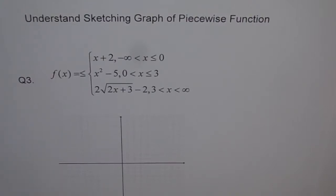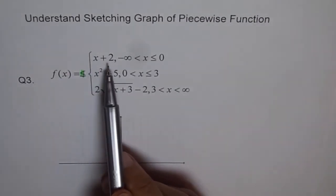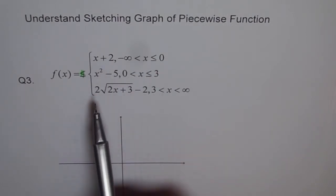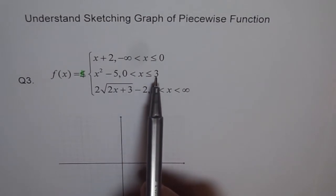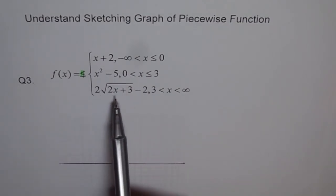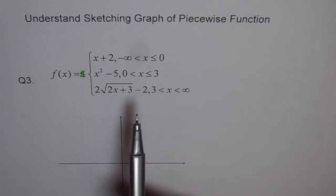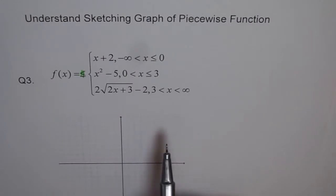Here is question number 3. Let's try to understand how to graph this piecewise function. The function f(x) equals x plus 2 if x is between minus infinity and 0, where 0 is included. The second part is a parabola x squared minus 5 when x is between 0 and 3, where 3 is included but not 0. And then we have a square root function: 2 times square root of 2x plus 3 minus 2, where x is greater than 3. So we have 3 different pieces joined together.